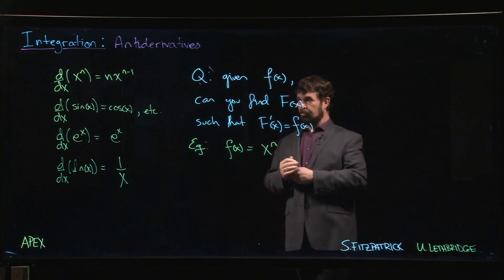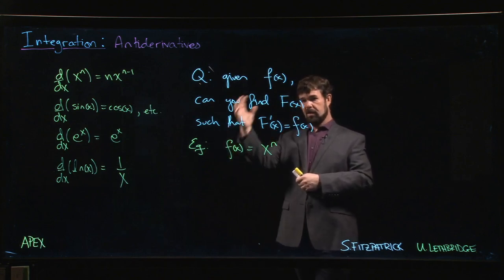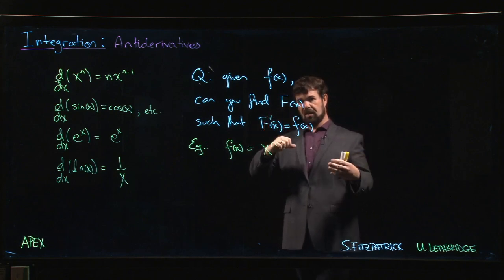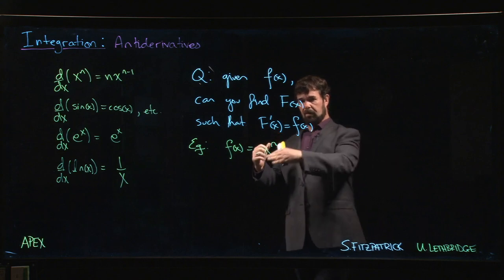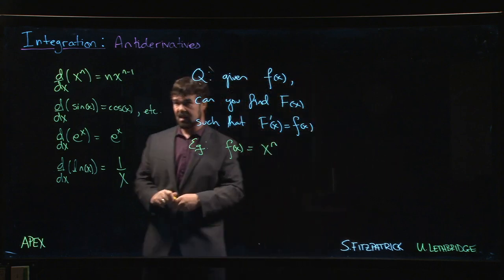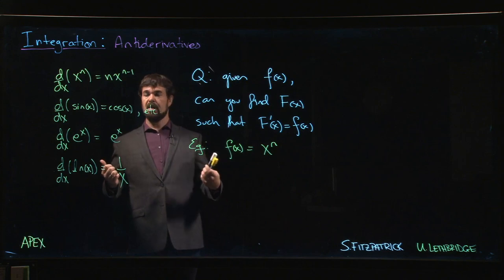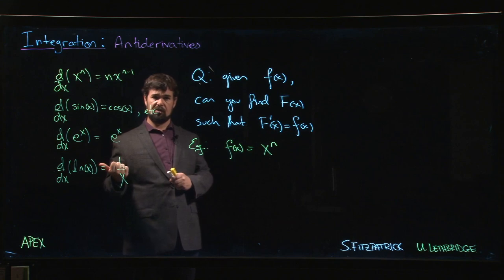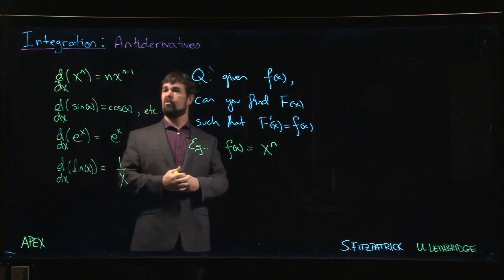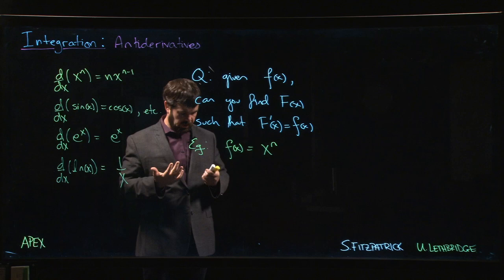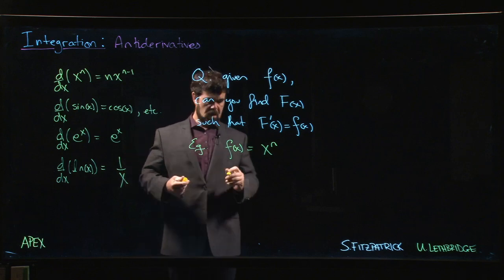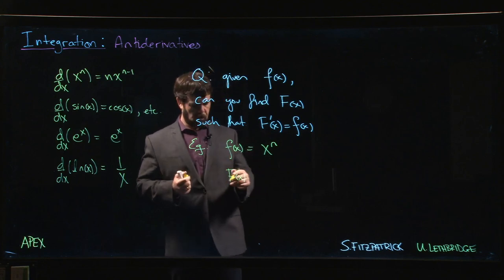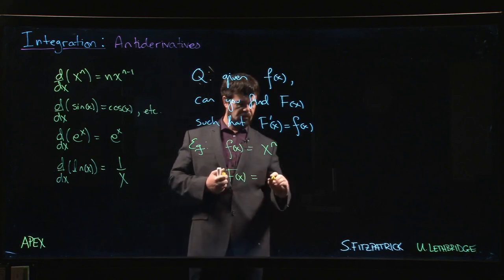Suppose you wanted to reverse that process of multiply by the exponent then subtract one from the exponent. You're hitting the undo button—you just did that, now you say I got to back things up, hitting control-Z on the keyboard trying to back things up. The first thing you'd have to undo is the last thing that you did. The last thing we did was subtracting one from the exponent. I need to undo a subtraction—how do you undo a subtraction? With an addition. So I better add one.